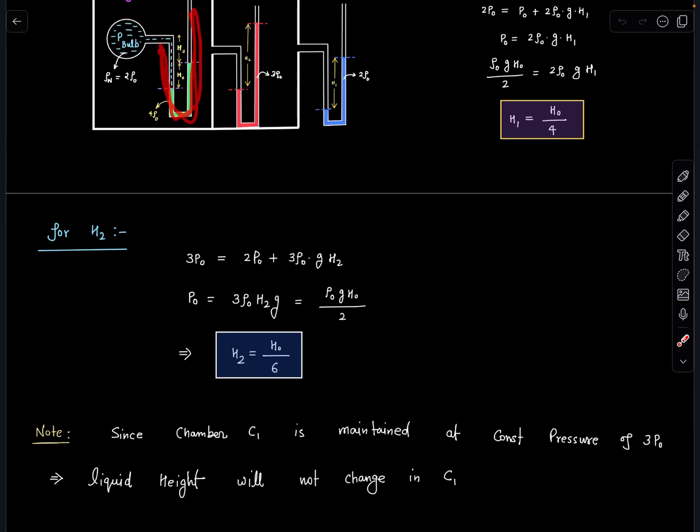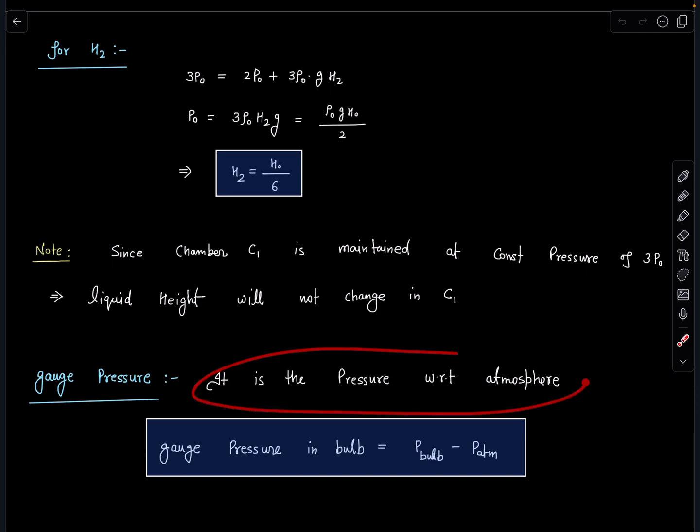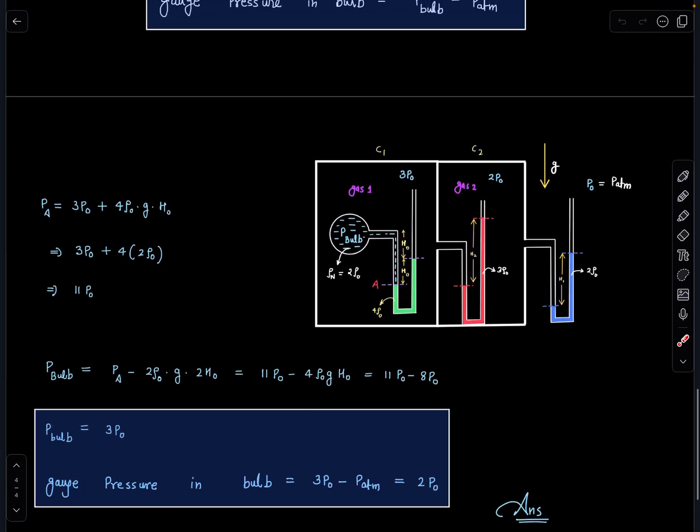So gauge pressure is the pressure with respect to atmosphere. Basically actual pressure minus p atm is the gauge pressure in the bulb. Pressure at the bulb we have to calculate. So here is the arrangement again. So 3p naught plus 4 rho naught g h naught, this is going to be the pressure at this point.